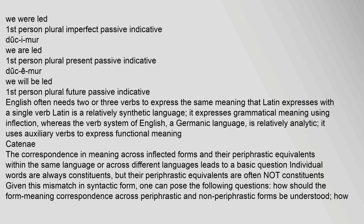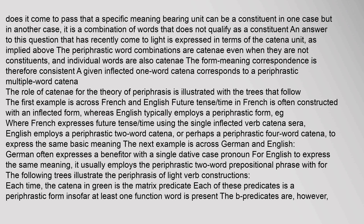The correspondence in meaning across inflected forms and their periphrastic equivalents within the same language or across different languages leads to a basic question. Individual words are always constituents, but their periphrastic equivalents are often not constituents. Given this mismatch in syntactic form, one can ask: how should the form-meaning correspondence across periphrastic and non-periphrastic forms be understood? An answer that has recently come to light is expressed in terms of the catena unit. The periphrastic word combinations are catenae even when they are not constituents, and individual words are also catenae. A given inflected one-word catena corresponds to a periphrastic multiple-word catena.